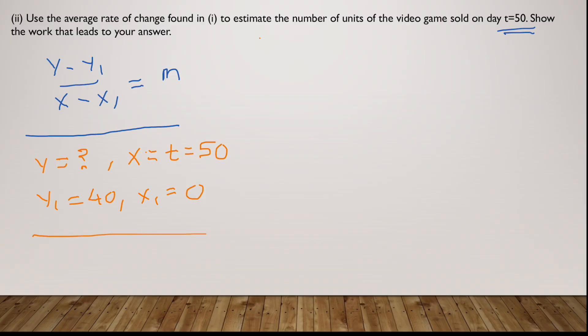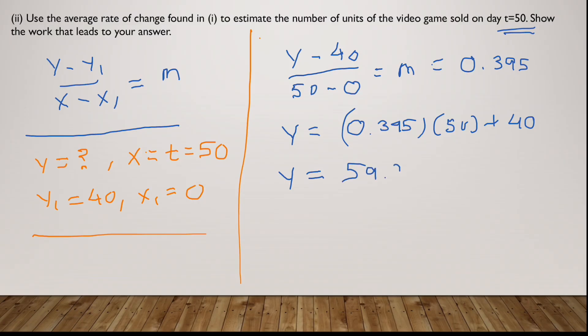Now that we have all our variables, we'll plug them in. So I have y, which is still y, minus y1, which is 40, upon—I have t as 50 minus 0—which is supposed to be the slope. Now from part 1, we know that the slope was 0.395. Three decimal approximations are fine. So if I move 50 to the other side and I add 40, y equals 0.395 times 50 plus 40. And if you take out the calculator and start putting in the values, you will get 59.780. That is what your answer would be.